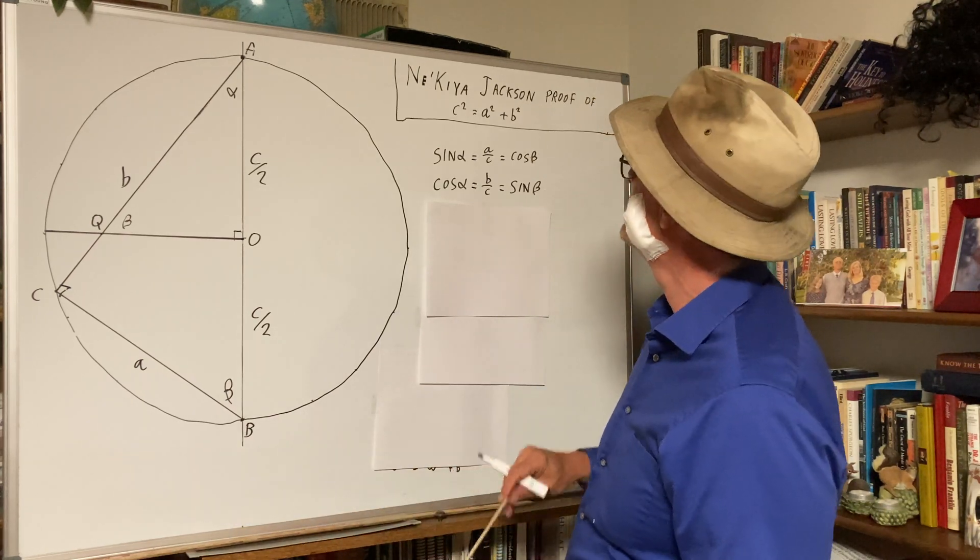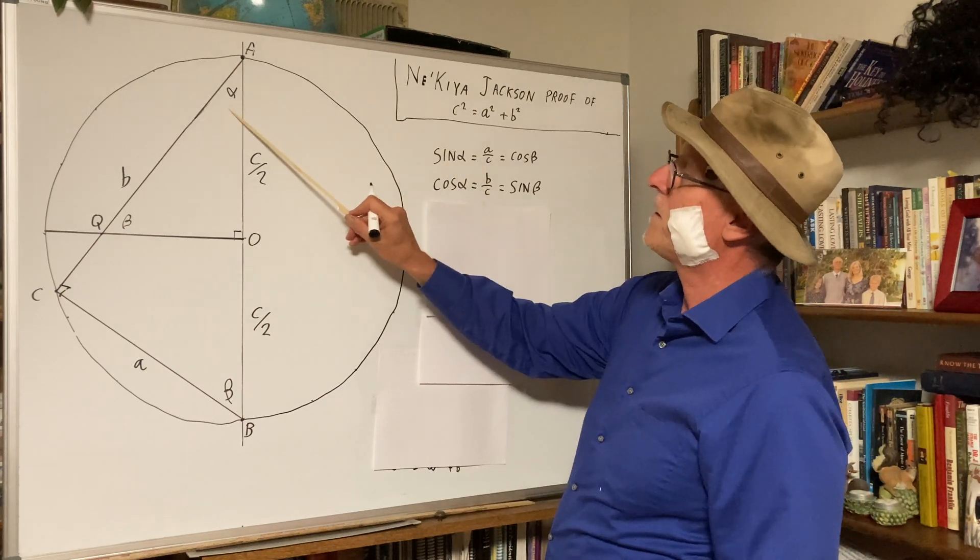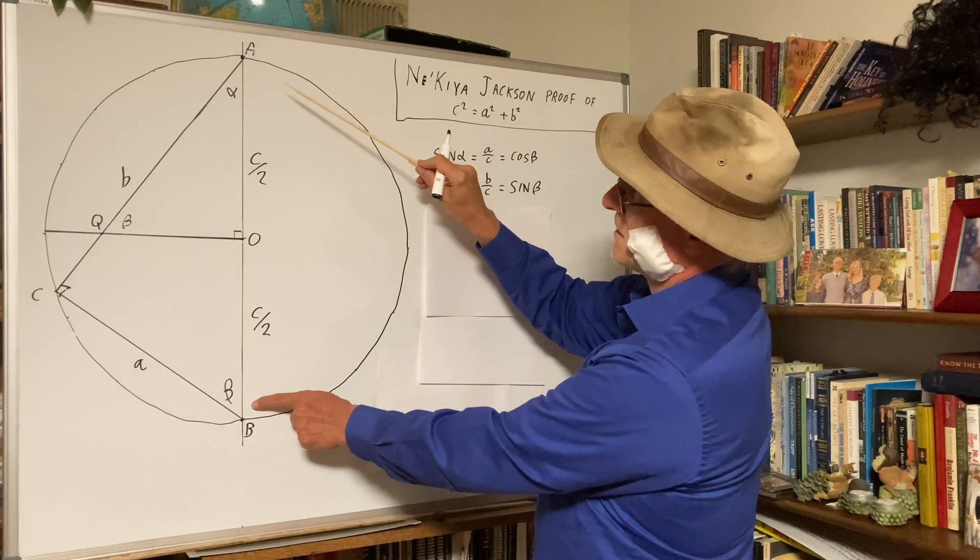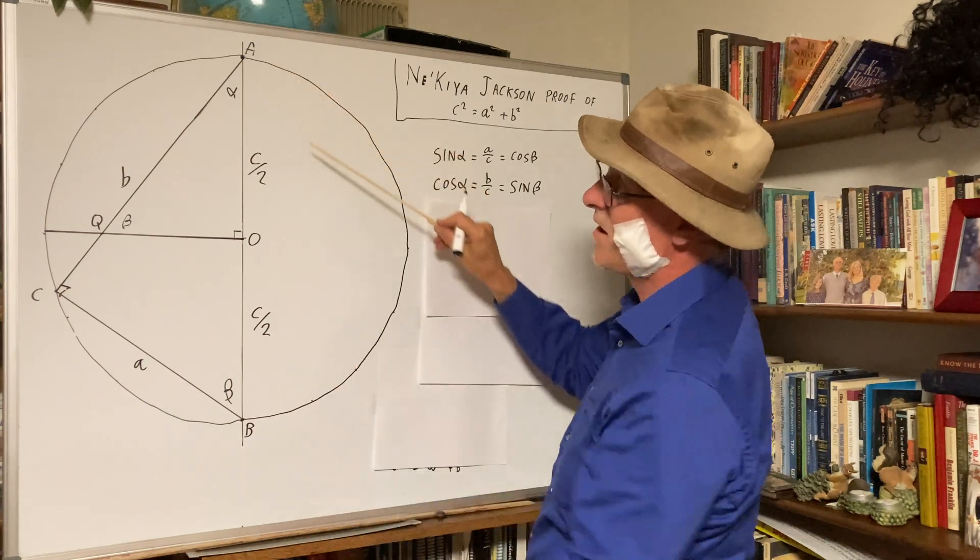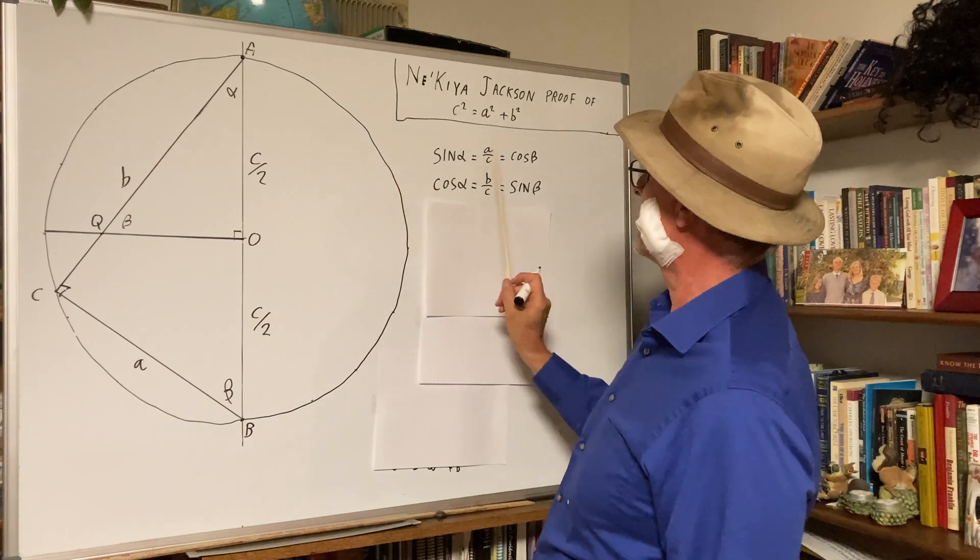And so we are reminded that sine of alpha, that's opposite over hypotenuse, that's A over C. The distance from here to here is C because that's the diameter. The radius is C over 2. That's C. That's A. That's sine alpha.